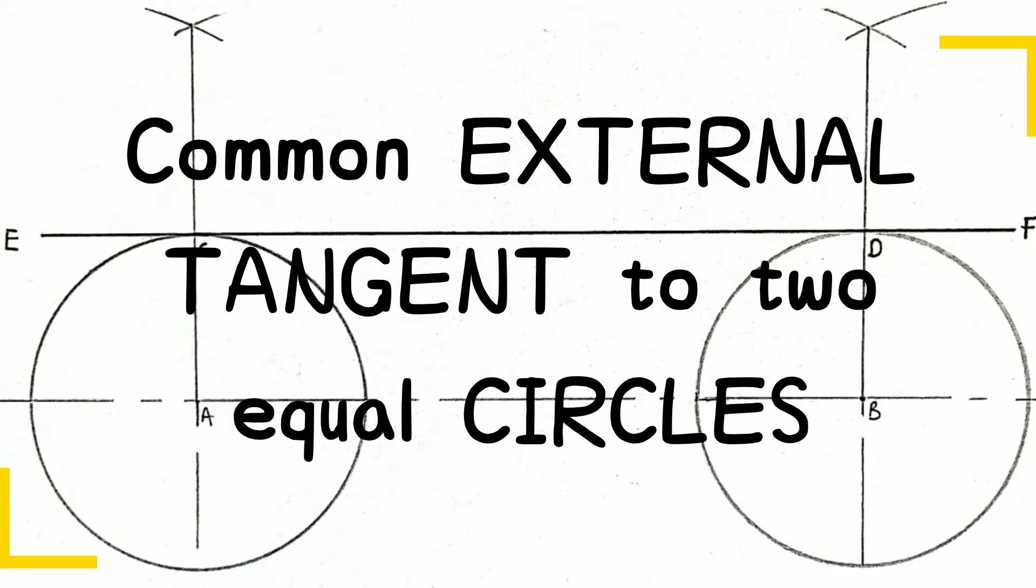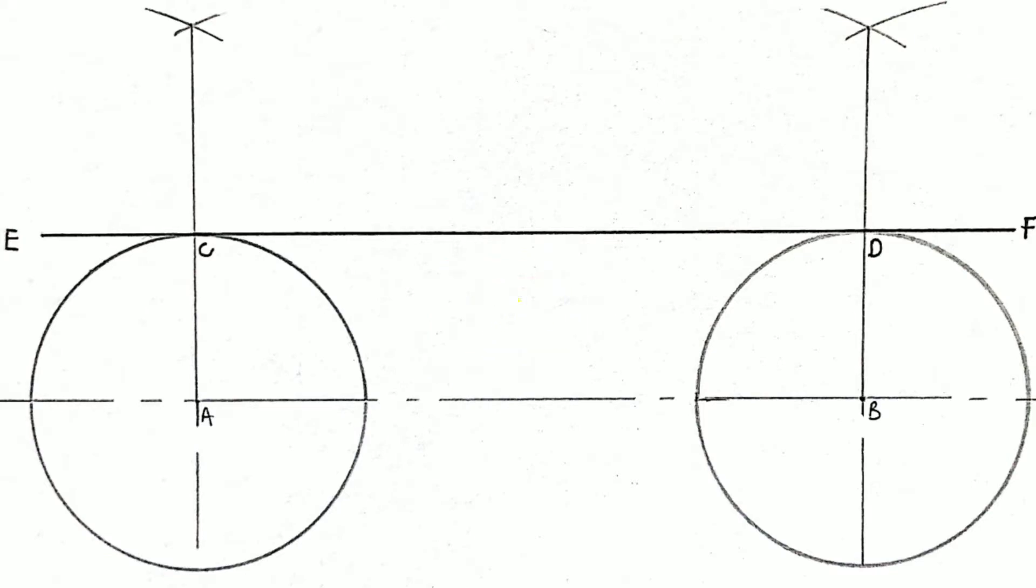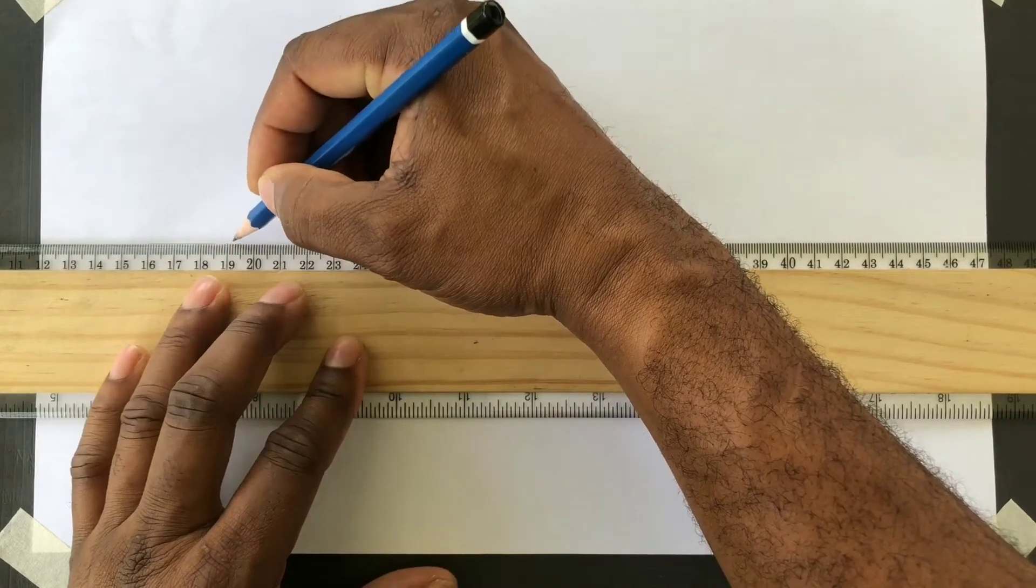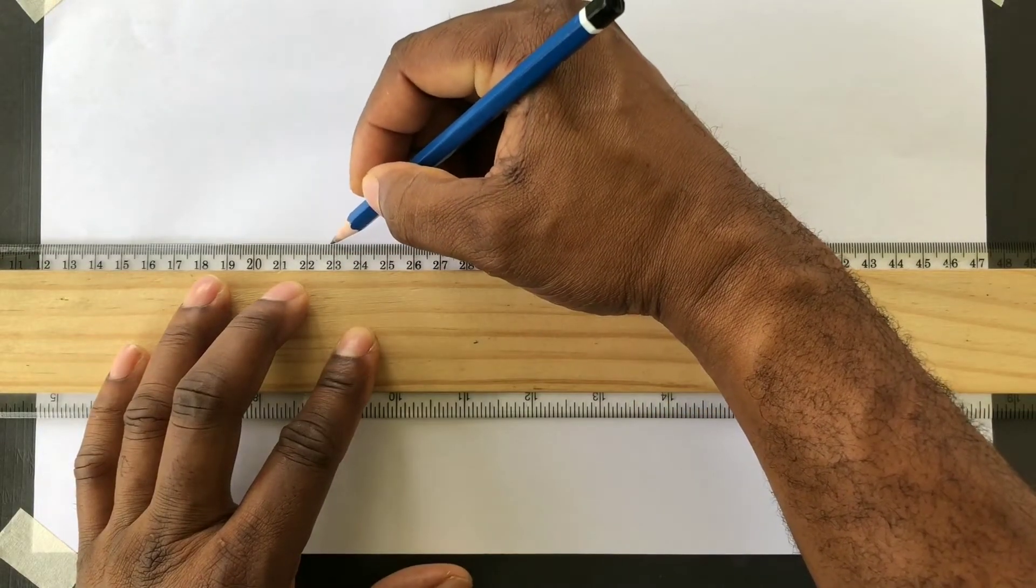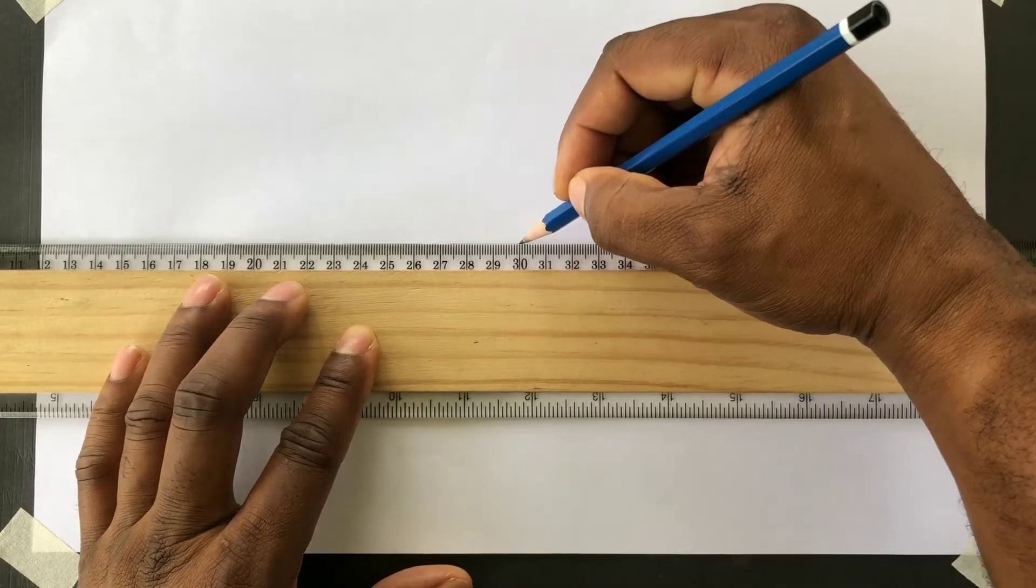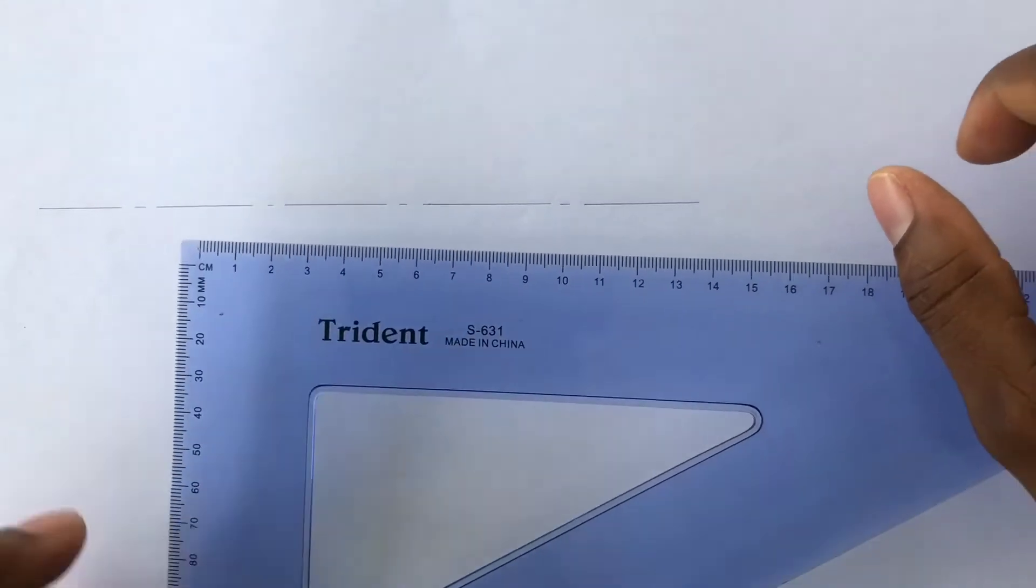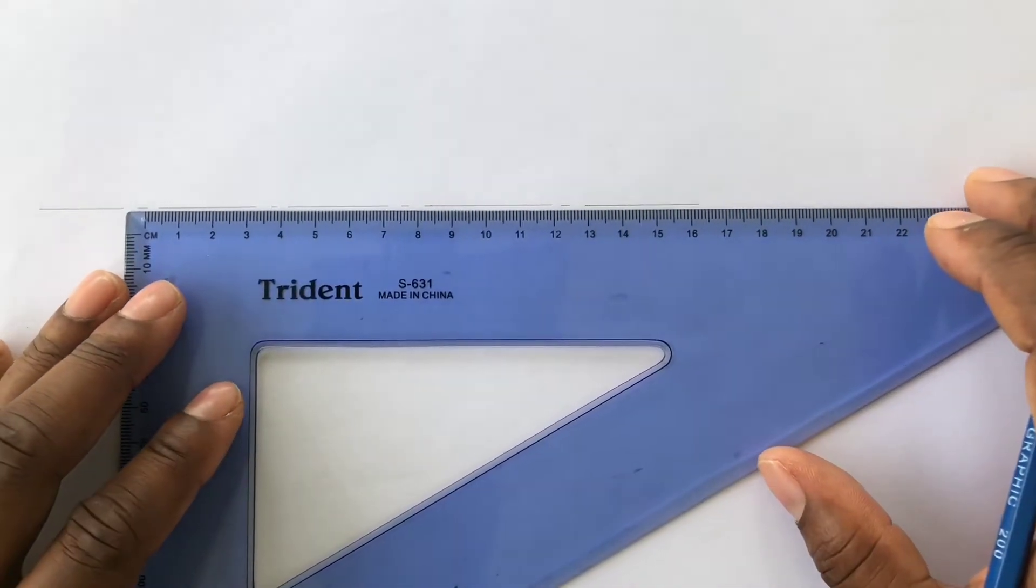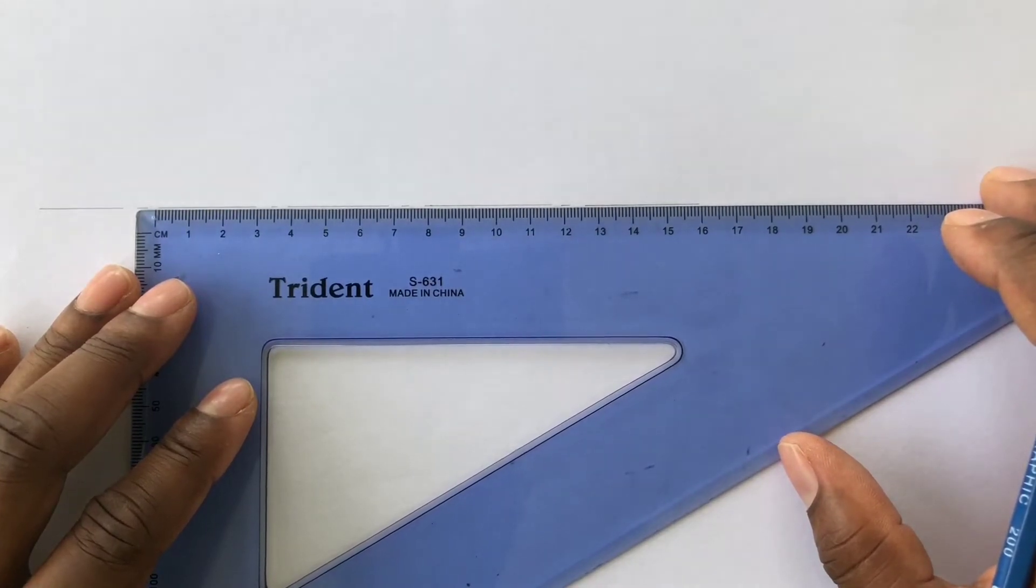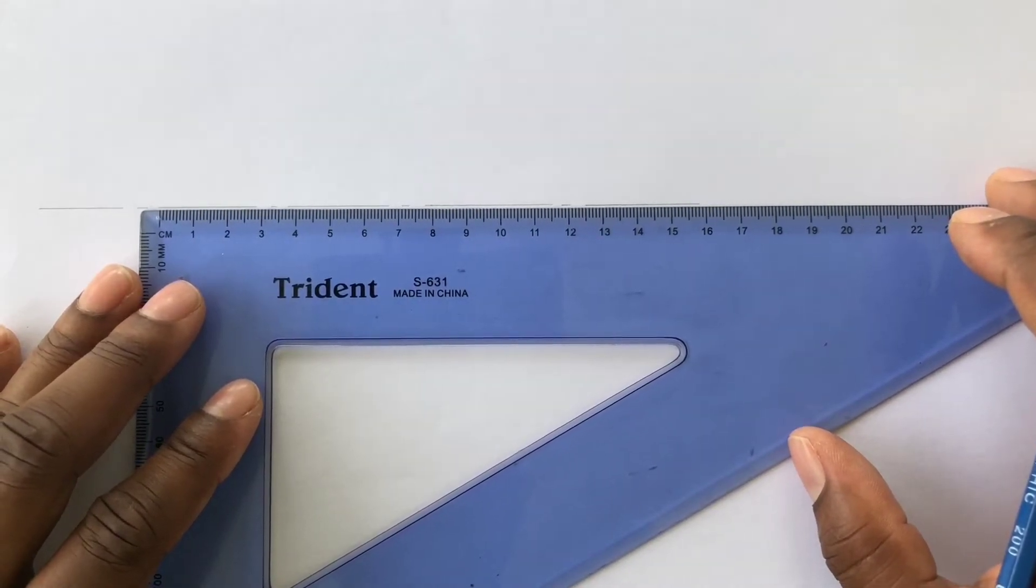We will first draw a horizontal center line. Next we will identify 100 millimeters on this line. 100 millimeters is the same as 10 centimeters.